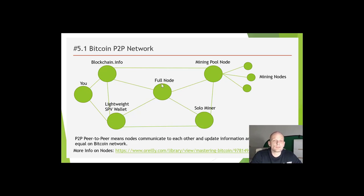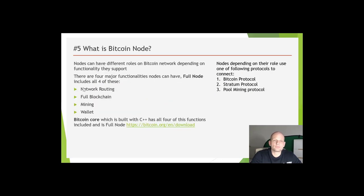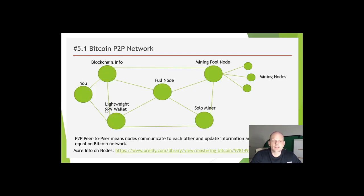You can download Bitcoin Core to get all functionalities: network routing, full blockchain, mining functionality, and wallet functionality. A lightweight SPV wallet includes network routing and wallet functionality. A solo miner includes network routing, mining functionality, and blockchain functionality. The lines between nodes represent connections, and each node is connected to about eight other nodes in this huge network.